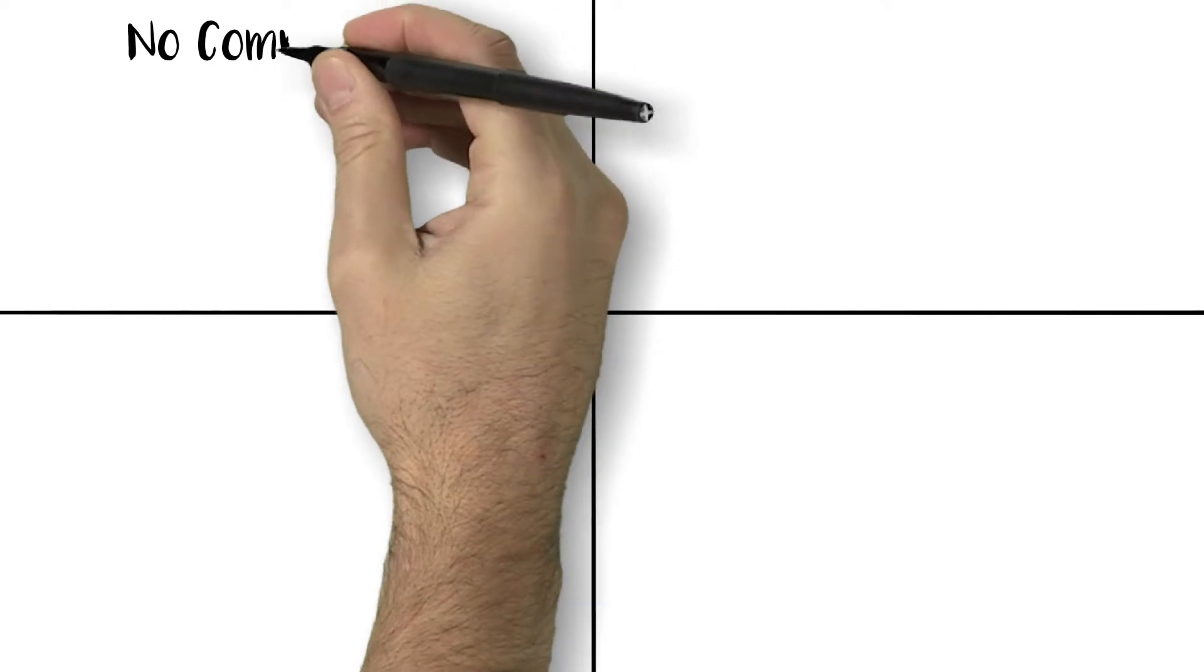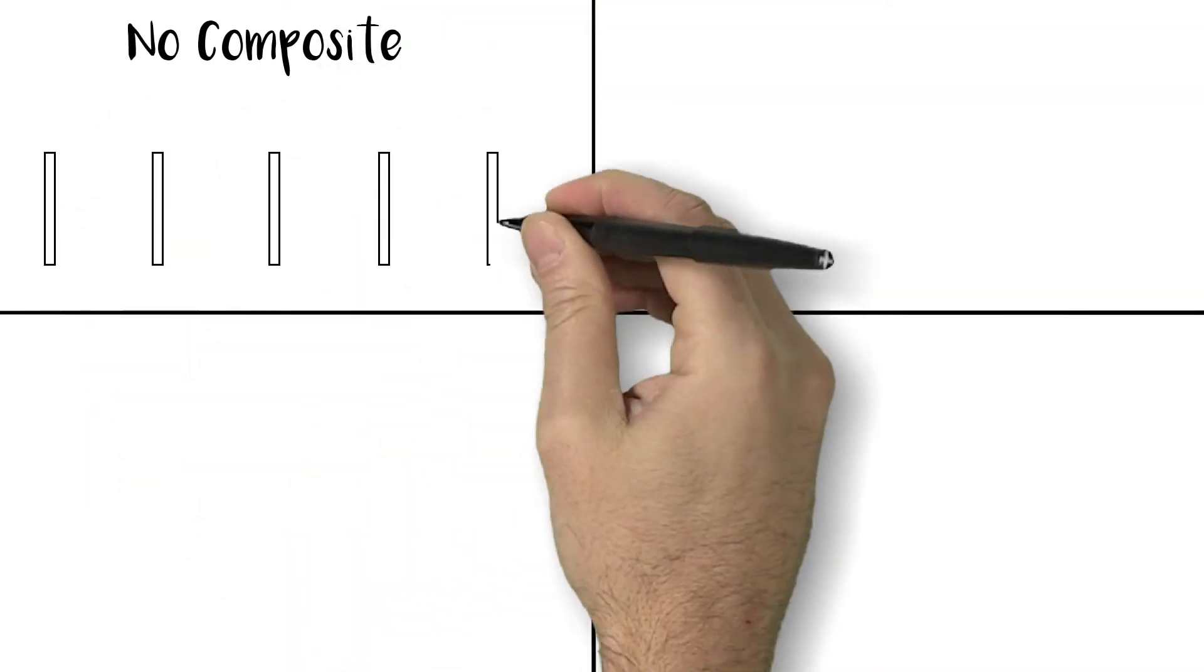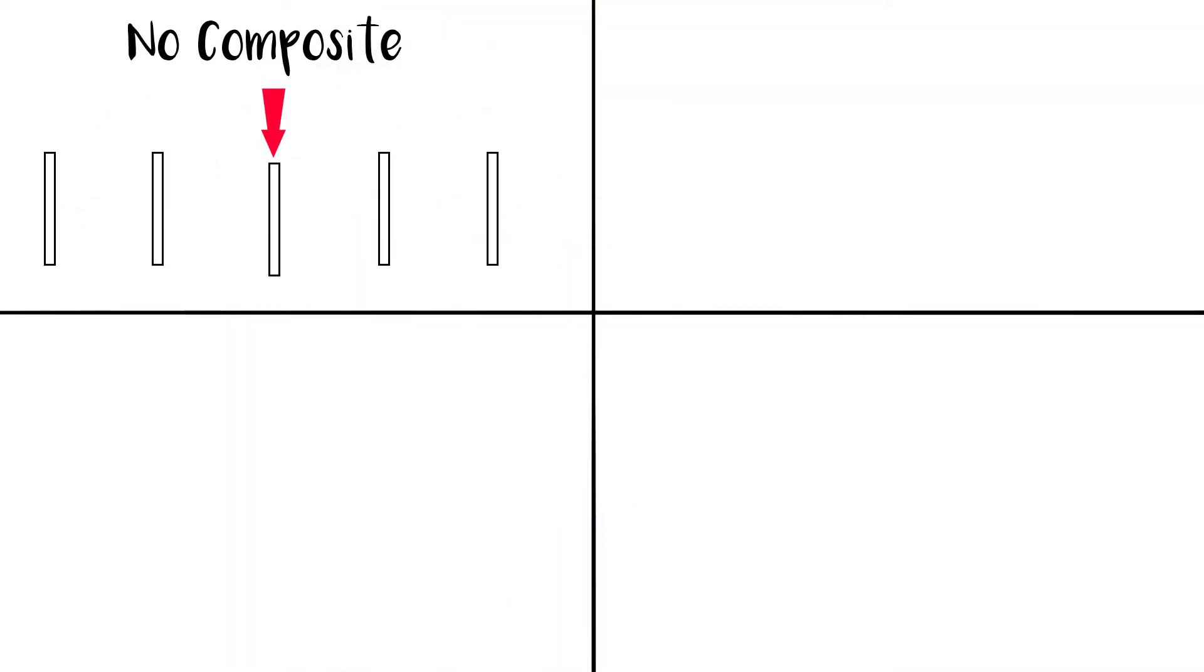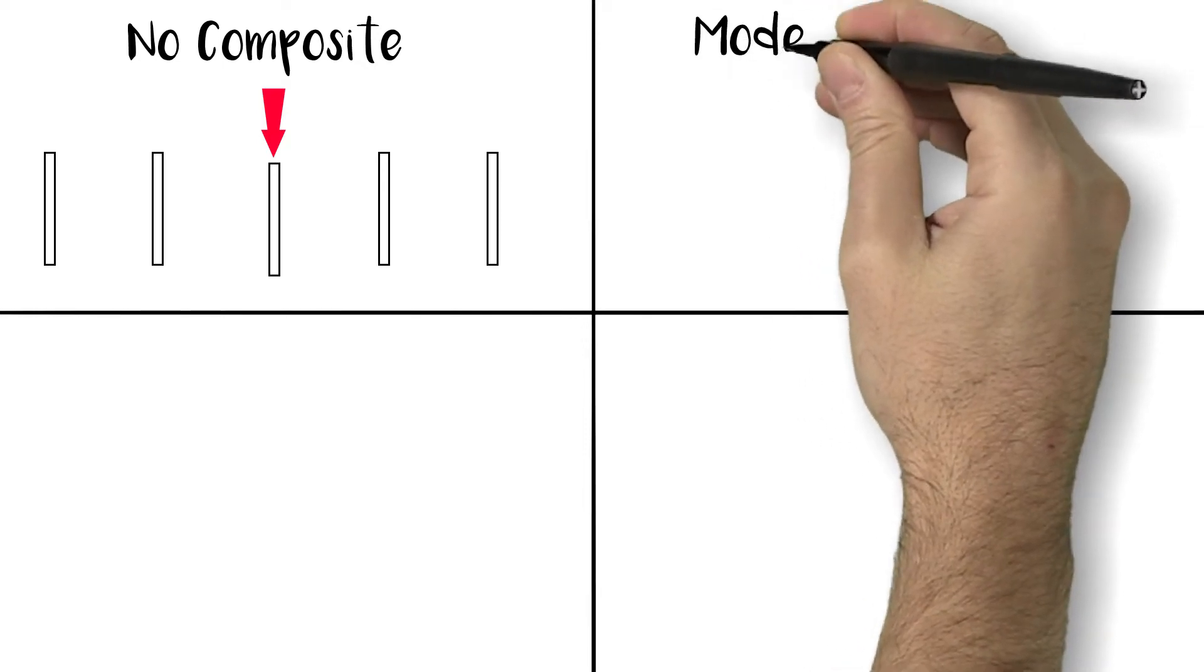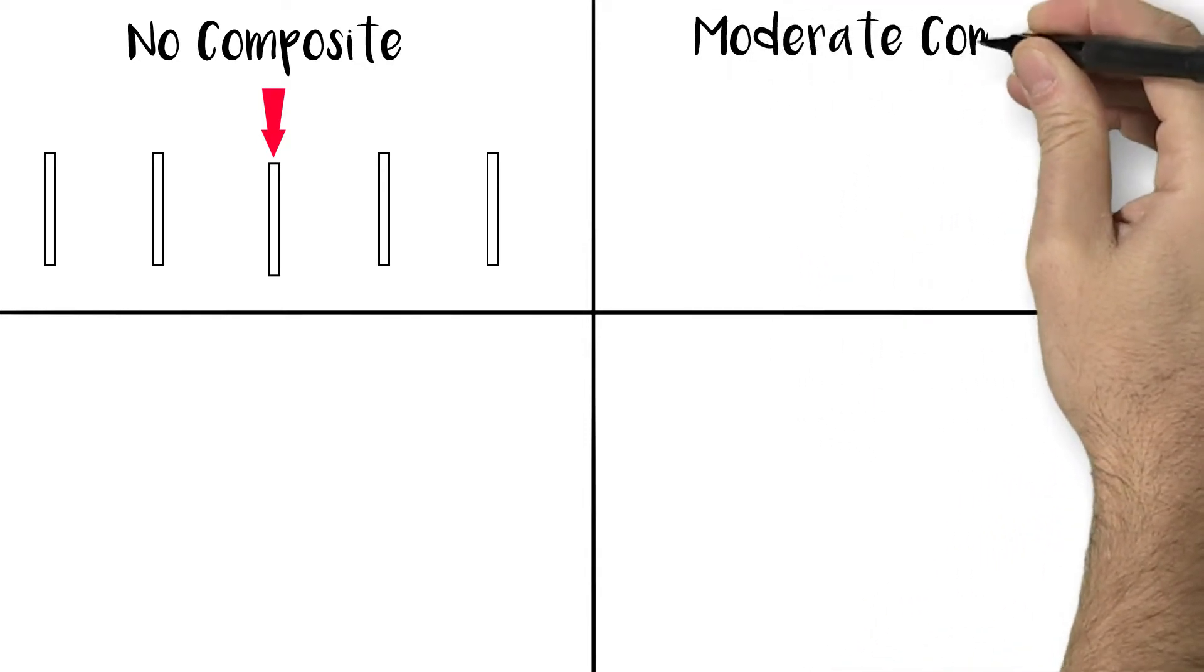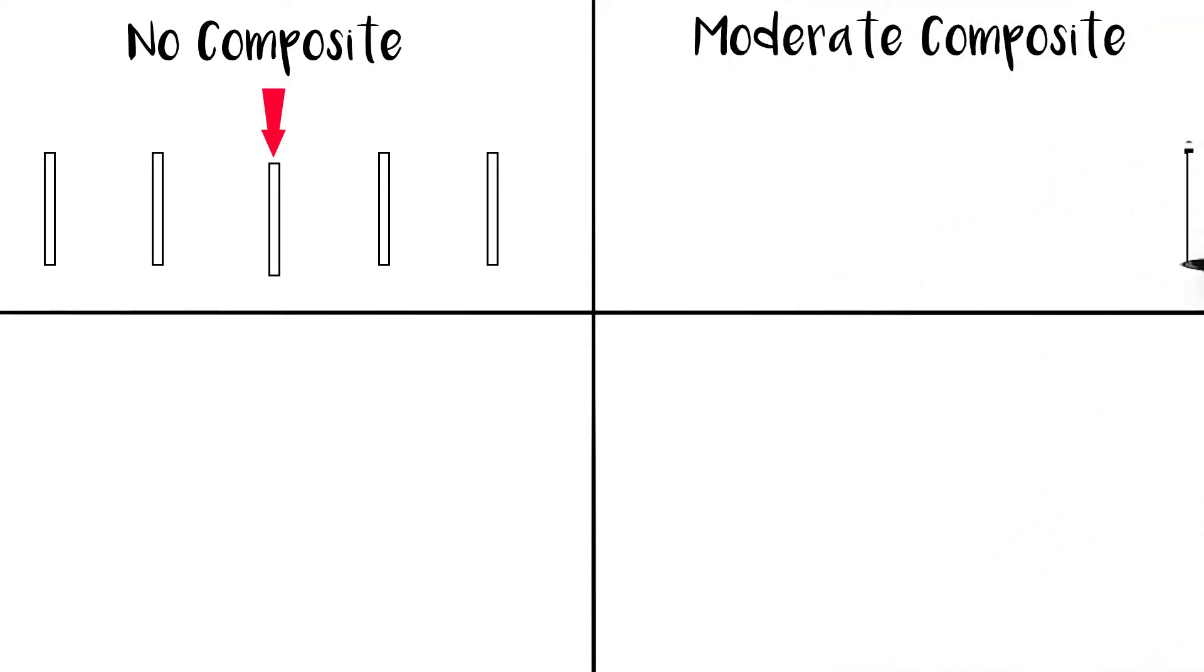No composite action: Joists carry point load as individual beams. Deflection is maximal. Moderate composite action: Floor becomes a basic structural system and a small part of the point load is transferred to nearby joists. Deflections are reduced.